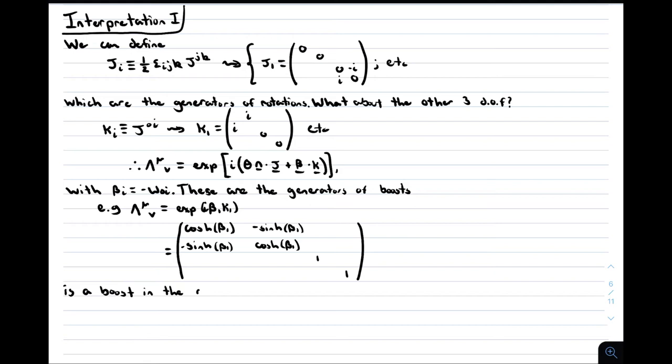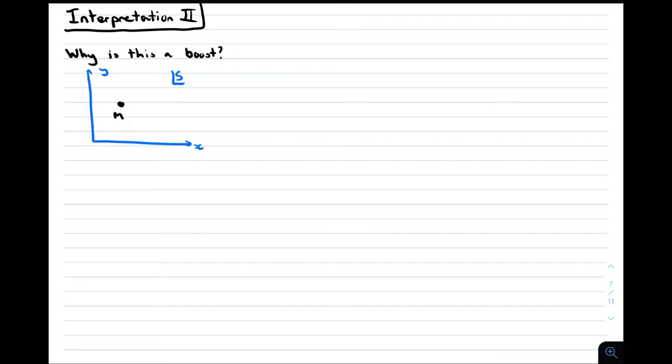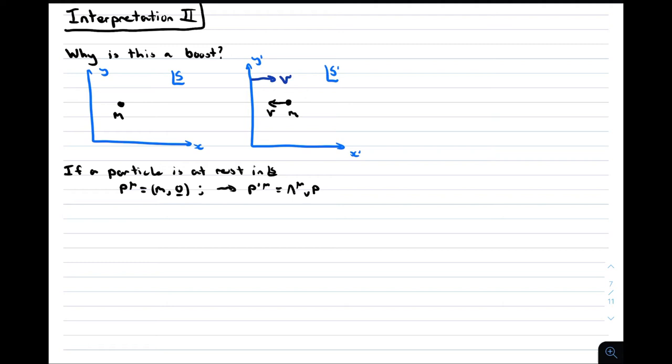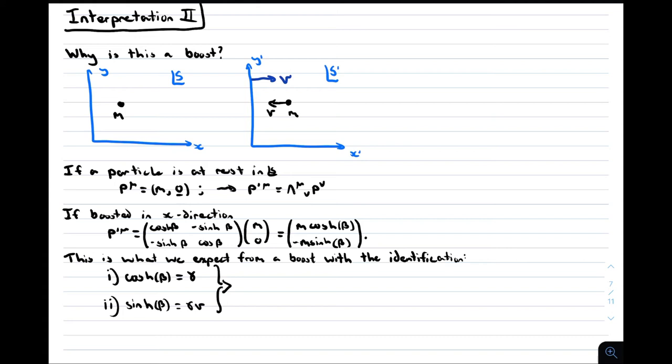But in what sense is this a Lorentz boost? Let's consider two frames of reference, S and S', with S' being the frame of reference boosted by a velocity v in the x direction relative to S. If a particle of mass m is at rest in S, then its four momentum should have a time component of m and a spatial component of 0. In S', the particle should have some momentum in the negative x direction. So after transforming, its new four momentum is multiplied by the matrix λ^μ_ν. This gives the four momentum after the transformation of m cosh β as the time component, and minus m sinh β as the spatial component. If we identify this with a standard Lorentz boost, we find that cosh β equals γ, and sinh β equals γv.